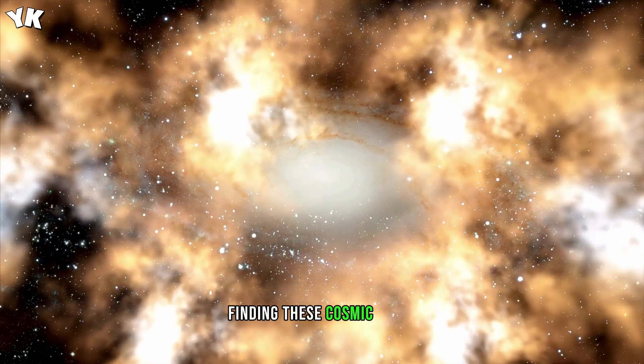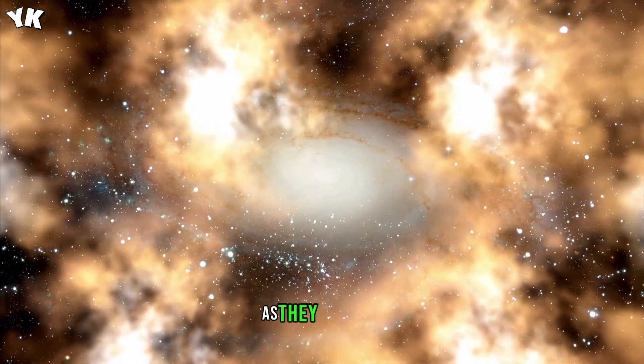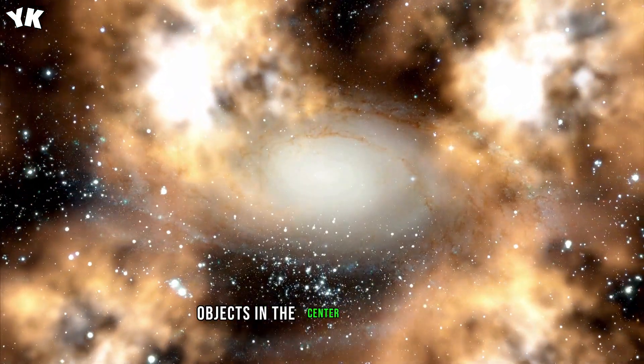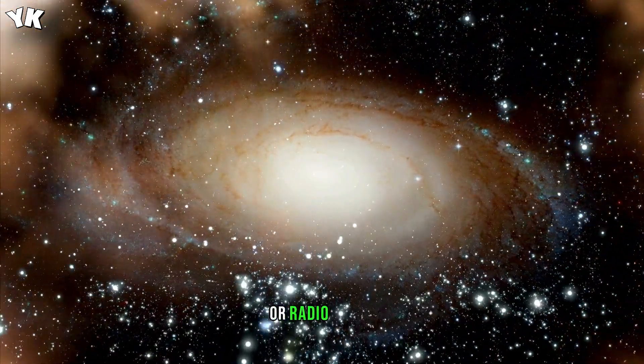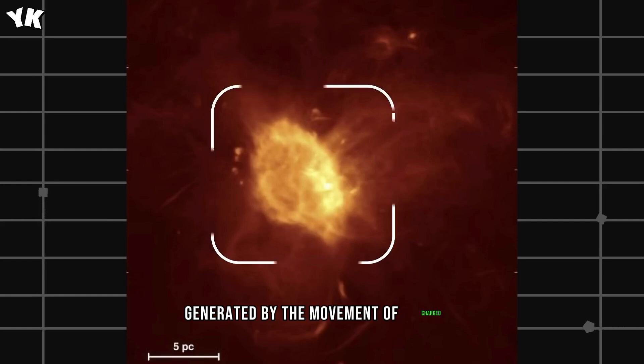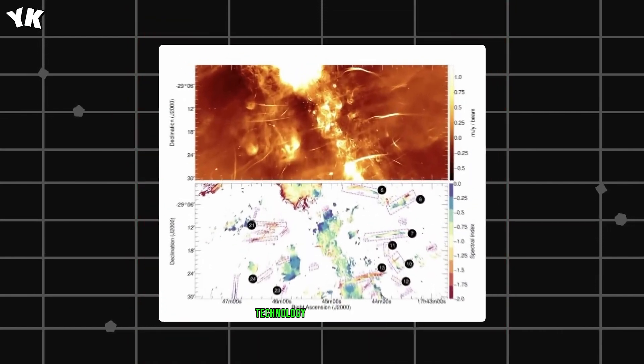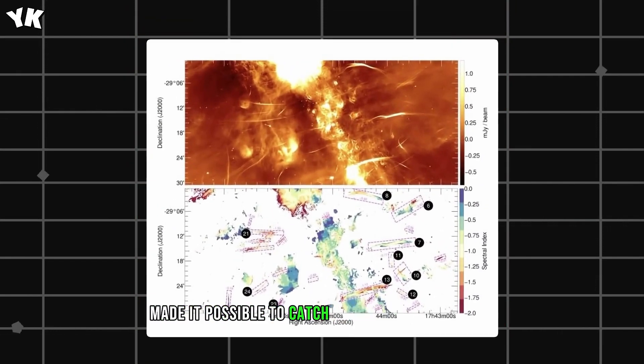Finding these cosmic wires was a difficult task as they strongly merge with other objects in the center of the galaxy. But MeerKAT can detect synchrotron radiation, radio waves generated by the movement of charged particles at near light speed. Combined with software image processing, the advanced technology eventually made it possible to catch the threads on camera.